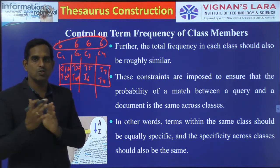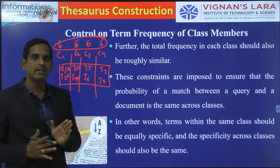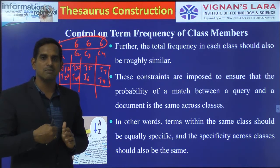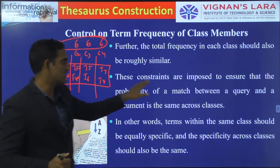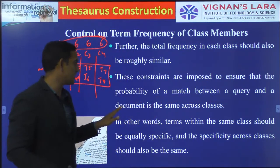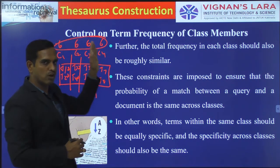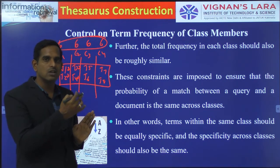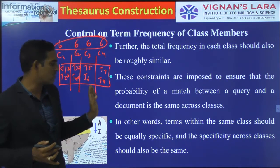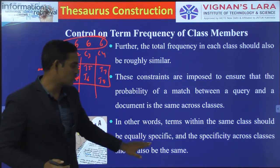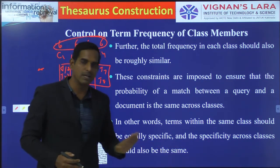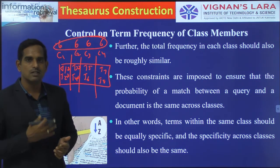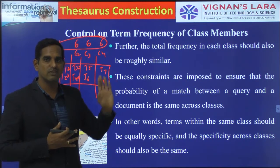The classes have to be formed in such a manner that the total class frequency is similar, and inside the class the terms have to be present so that term frequency also has a similar value. These constraints are imposed to ensure that the probability of a match between a query and a document is the same across classes — there is equal probability for each class to return a result. Terms within the same class should be equally specific and specificity across classes should also be the same.